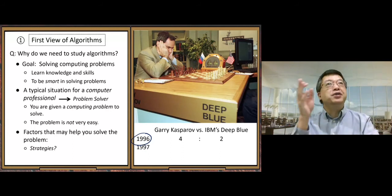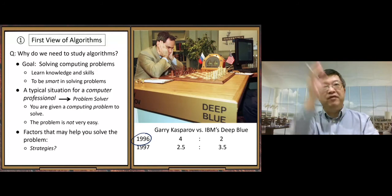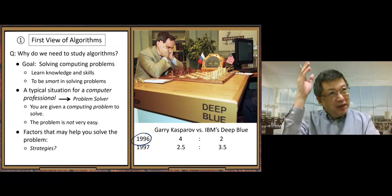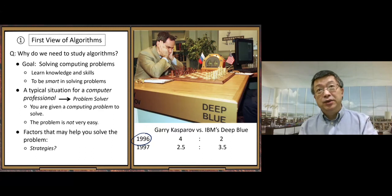But the next year, 1997, AI beat the human champion, 3.5 versus 2.5. So you can see. So that was a big milestone, big milestone at that time, big story, more than 20 years ago.